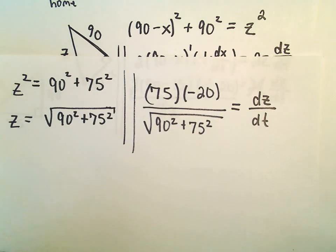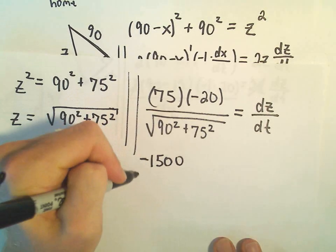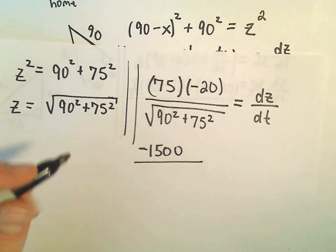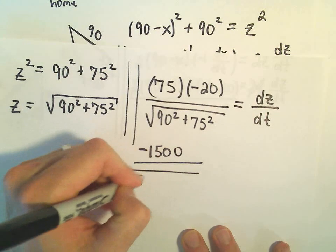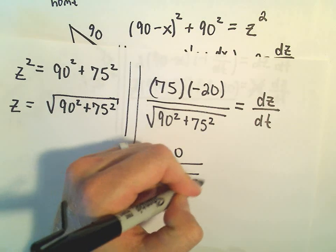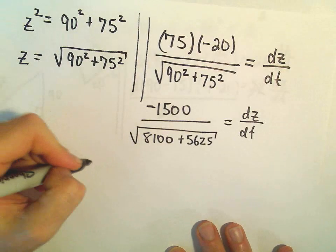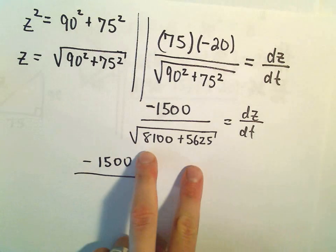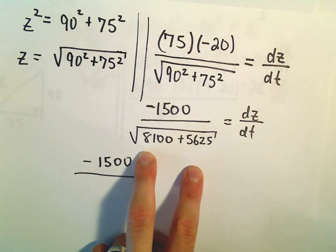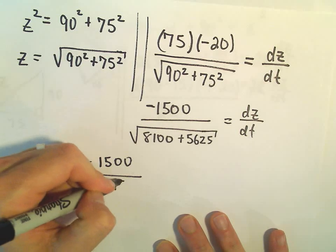So now I'm just going to plug all this stuff into a calculator. So negative 20 times 75, I'm getting negative 1,500. Then in the denominator, we would have the square root. So 90 squared is 8,100. 75 squared is 5,625. And I think we can just keep simplifying this a little bit more. So 8,100 plus 5,625, that's 13,725. I'm just going to go ahead and take the square root of that. So I'm getting roughly 117.15.